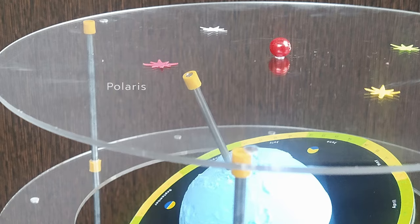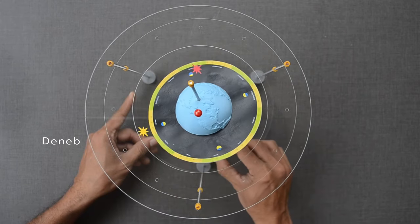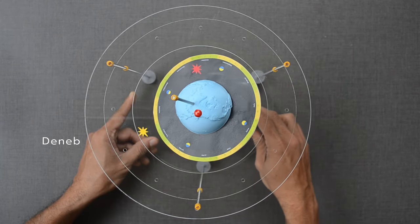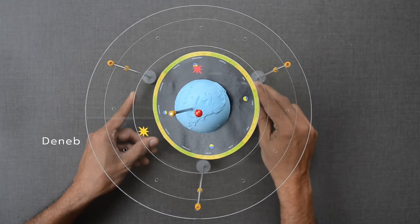Right now, Polaris is our pole star. After around 8000 years, Deneb will be the pole star.